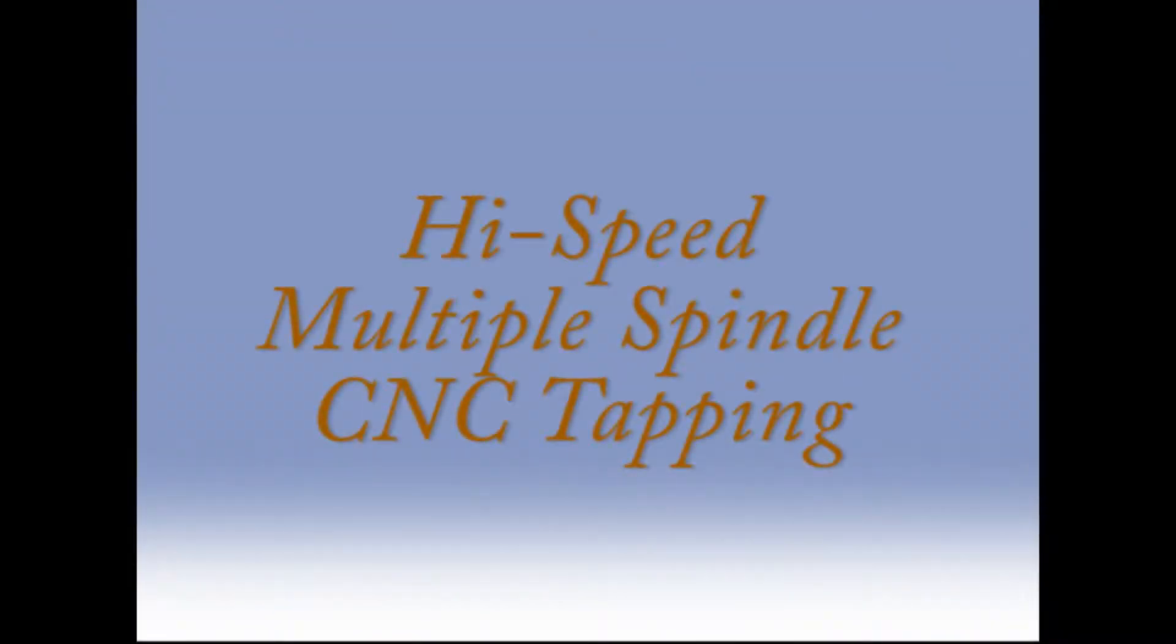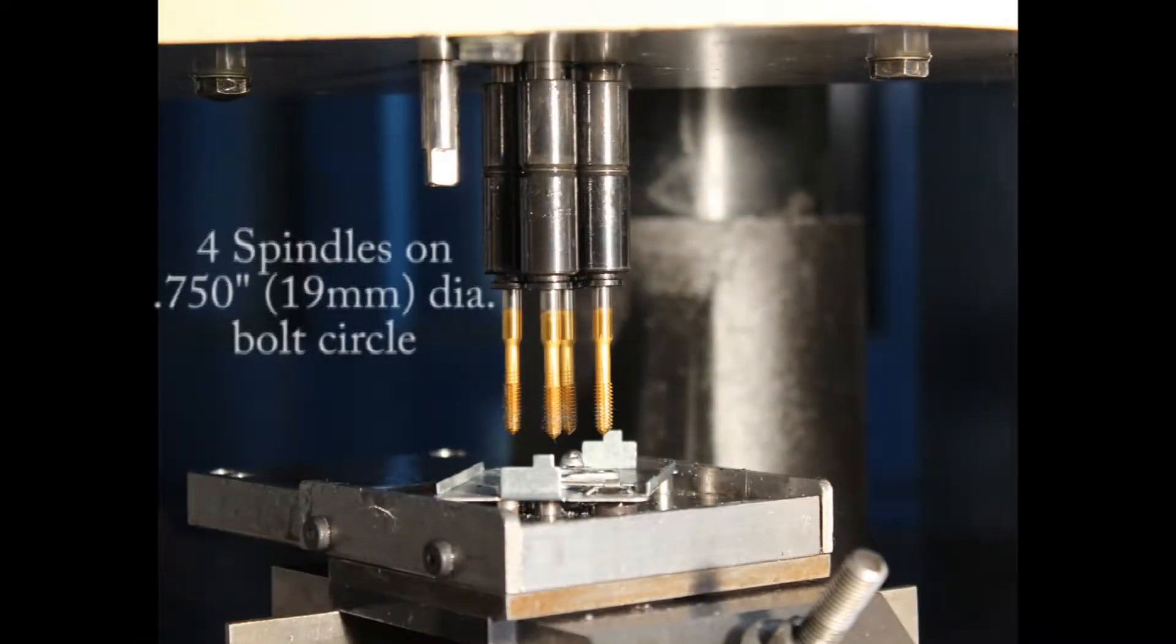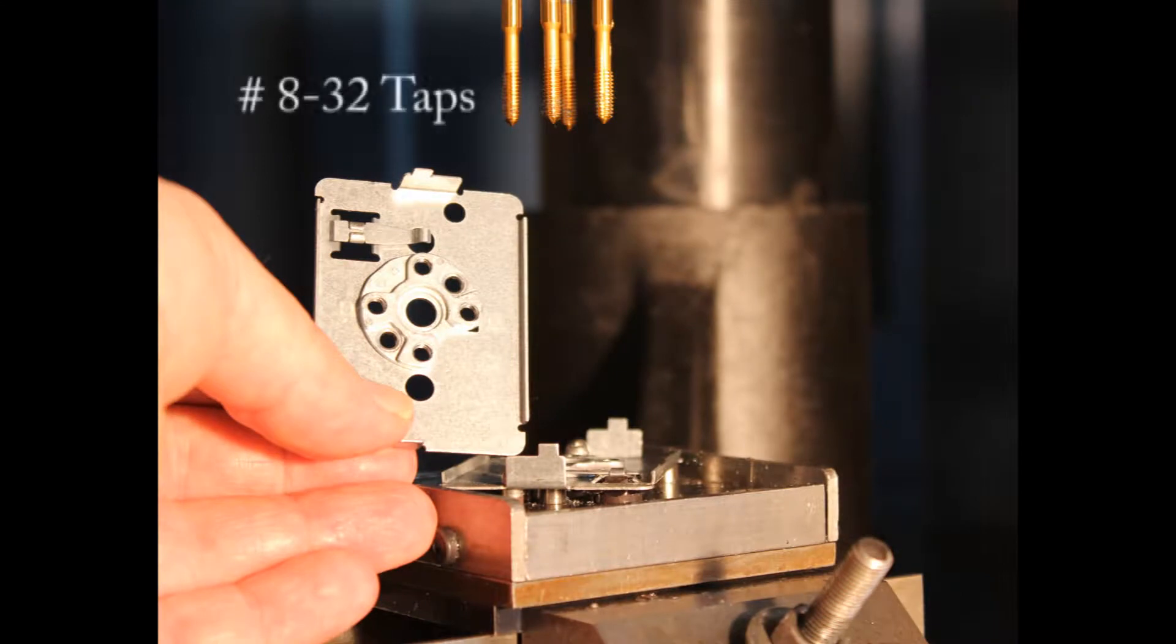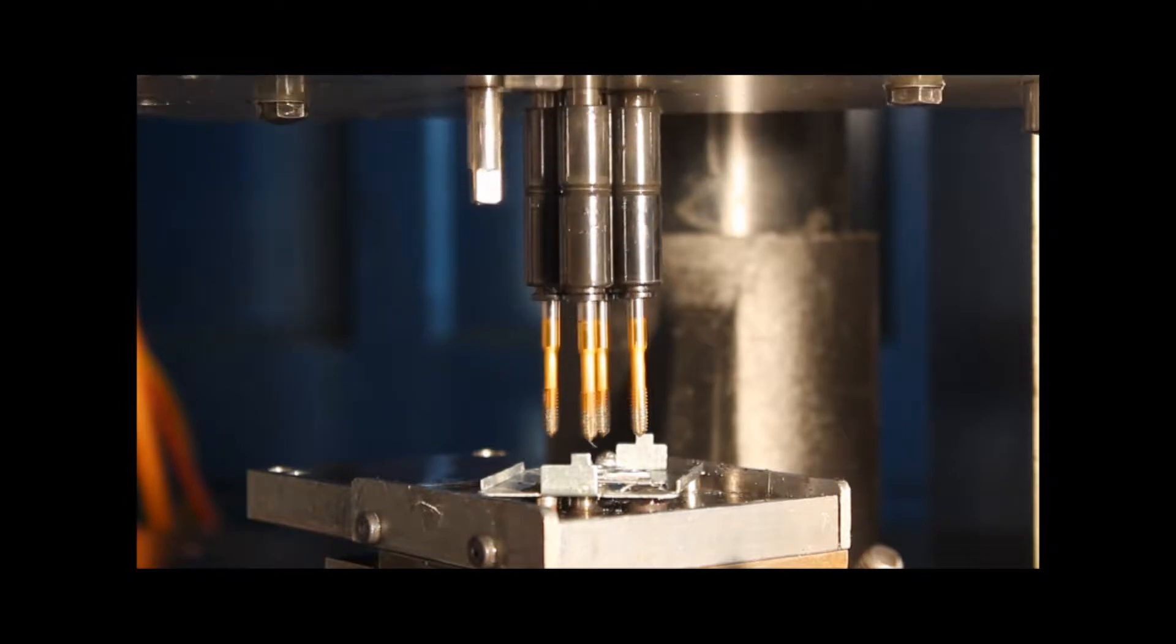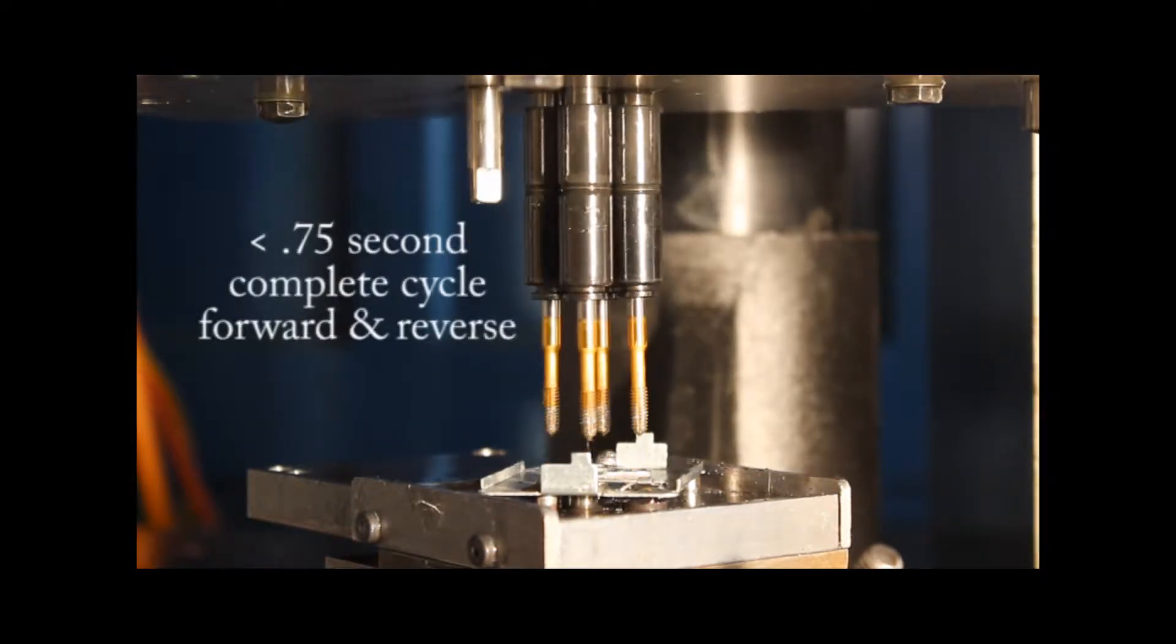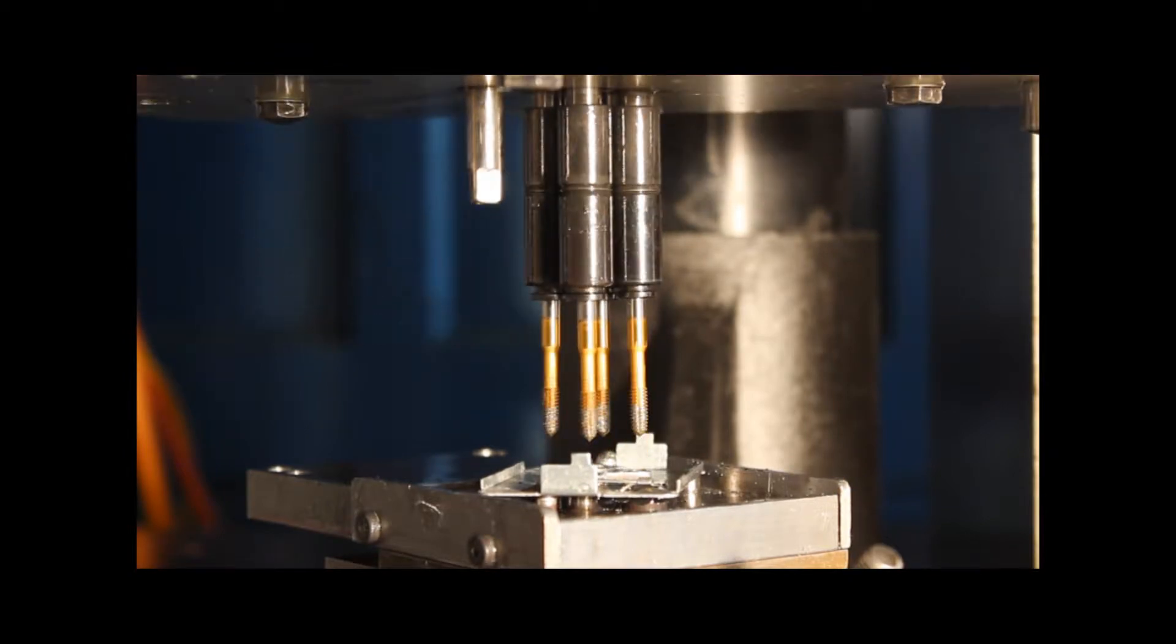High-speed multiple spindle CNC tapping. In this example, a Zagar gearless four spindle tapping head and a vertical MQ-150 CNC drill tap station are applied to tapping four number 832 holes in raw steel stampings. The spindles are equally spaced at 0.750 inch 19 millimeter diameter bolt circle.